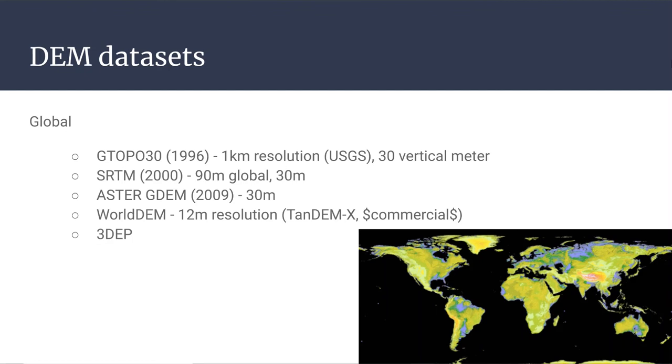A more recent global dataset for Elevation is called WorldDEM. I haven't actually seen any of this data firsthand. I just saw that this exists. And this is 12 meter resolution, so quite a bit higher resolution than SRTM or ASTER for the entire world. However, this is a commercial dataset. That means some company owns it. They own the copyright to it. If you want to get an area on Earth at 12 meter resolution from this WorldDEM dataset, it's going to cost you a lot of money.